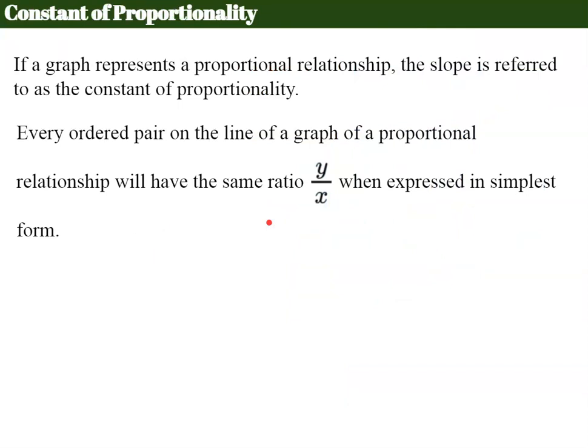Now let's talk about a big vocabulary word called constant of proportionality. If a graph represents a proportional relationship, the slope is referred to as the constant of proportionality, reminding you that the graph of a proportional relationship is a line that passes through or begins at the origin. So it's kind of like calling a square a square instead of a rectangle. Instead of calling the slope of a line that passes through the origin a proportional relationship, we can call it the constant of proportionality, which is just one more way to say the slope of a proportional relationship. It's a constant proportionality, and every ordered pair on the line simplifies y over x to be the slope or the constant of proportionality. So every single ordered pair simplifies y over x to the same simplest form.